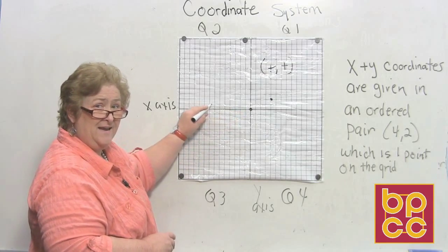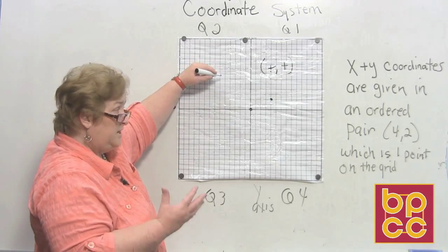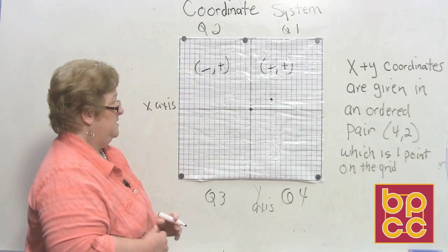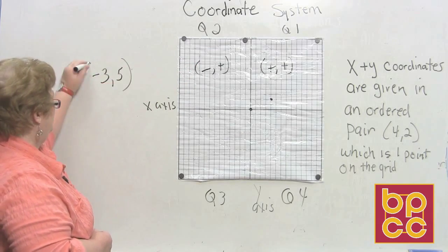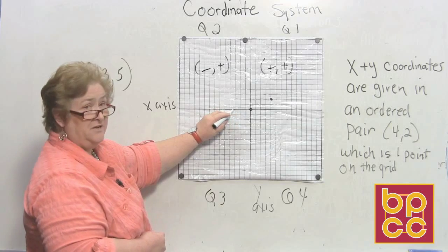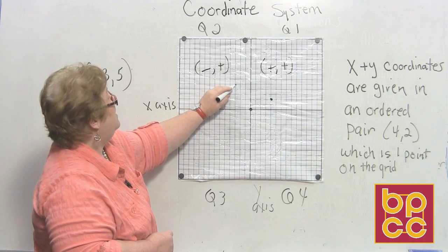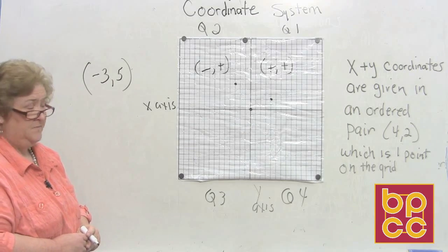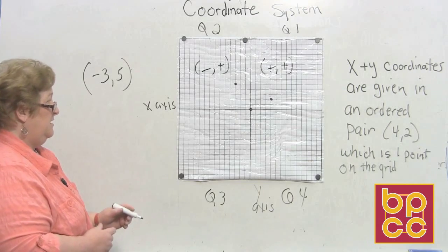In quadrant 2, we go a negative x and then a positive y. Any ordered pair in this quadrant has a negative x and a positive y. For example, (-3, 5): from the origin move left three, then go up five. That is the point (-3, 5).